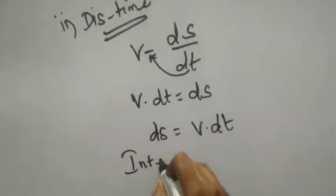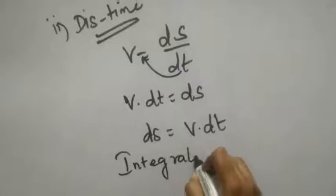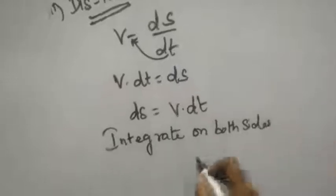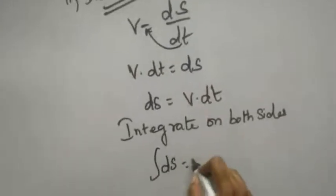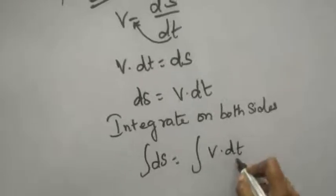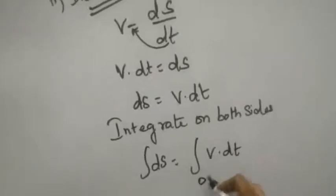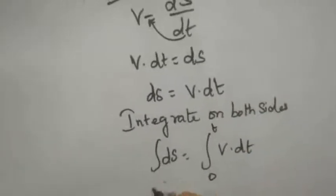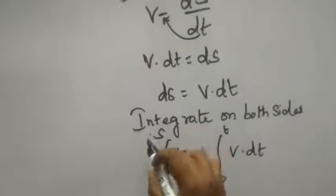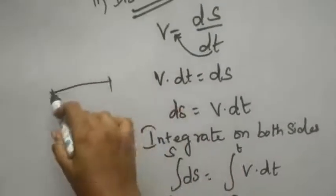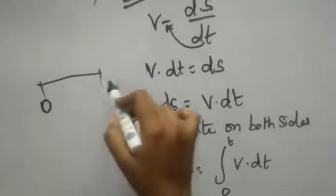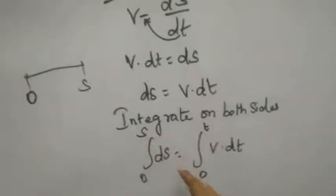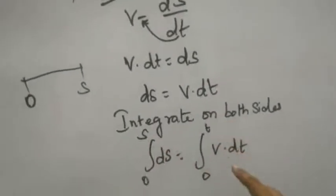Again, integrate on both sides. The integral of ds equals the integral of v into dt. For time, the limits are 0 to t, since time varies from 0. For displacement, it starts from 0 and moves to some distance s, so the limits are 0 to s. Which gives: integral from 0 to s of ds equals integral from 0 to t of v dt.